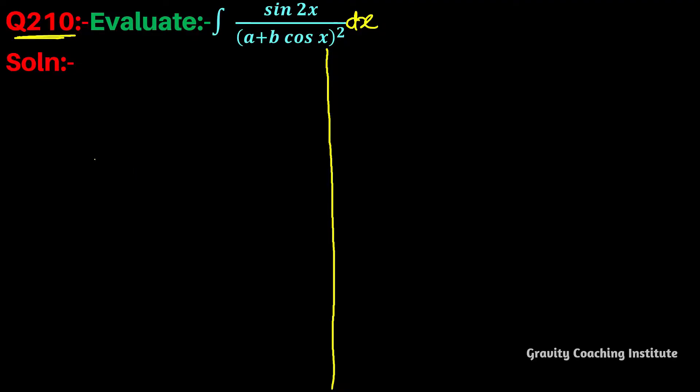Question number 210: Evaluate integration sin 2x by a plus b cos x whole square dx. So first of all, let I equal to integration sin 2x by a plus b cos x whole square. Here we use sin 2x...